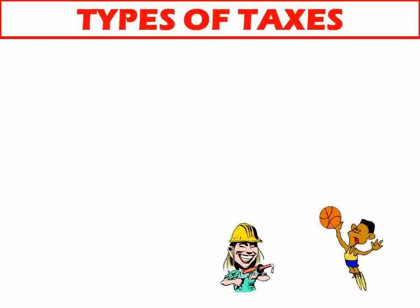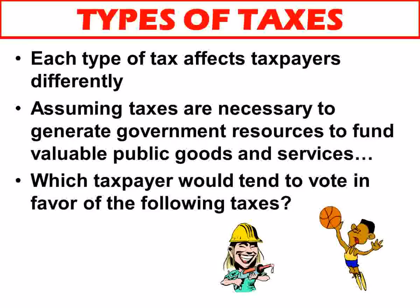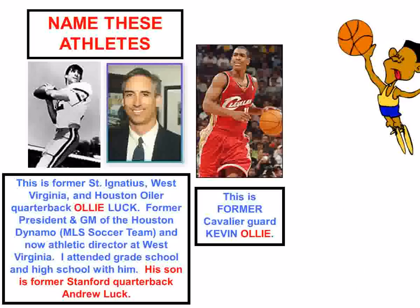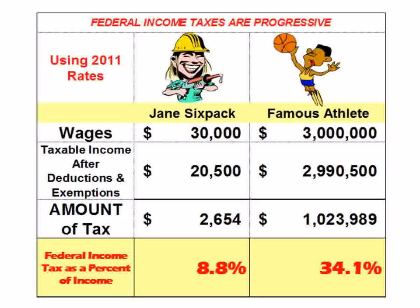Then I introduce the students to two people. The woman in the hard hat is Jane Sixpack, who makes thirty thousand dollars a year. The basketball player — whose name is Oligopoly — makes three million dollars a year. I ask students what would be each person's attitude toward these different types of taxes. Using 2011 federal income tax rates, Oligopoly pays a much greater amount of tax and a greater rate of tax. The federal income tax is progressive — the more you make, the greater rate you pay.